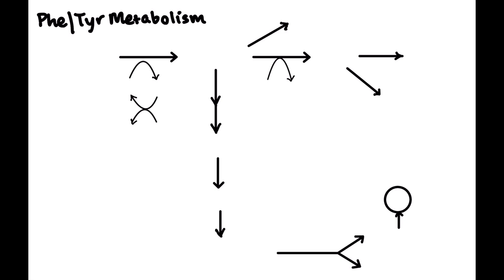We're going to start with the amino acid phenylalanine, which is an essential amino acid. It is the basis for the creation of tyrosine, which is important for a lot of different processes. The enzyme that converts phenylalanine to tyrosine is called phenylalanine hydroxylase. Phenylalanine hydroxylase uses a very special cofactor called tetrahydrobiopterin, which we'll write as BH4.